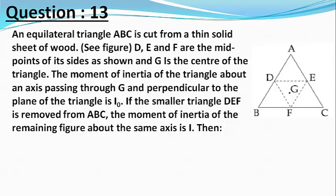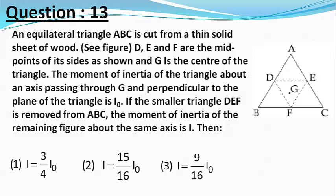If the smaller triangle DEF is removed from the triangle ABC, the moment of inertia of the remaining figure about the same axis is I. Then our options are: I equals 3 by 4 I0, I equals 15 by 16 I0, I equals 9 by 16 I0, and I equals I0 divided by 4.